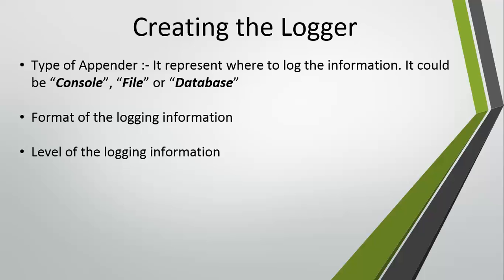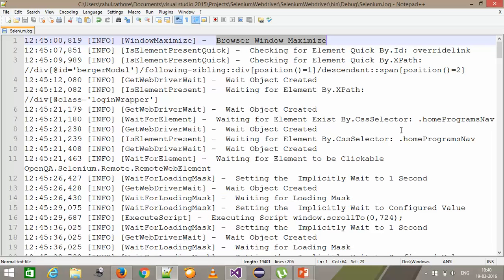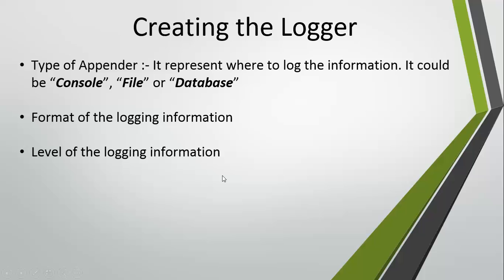The second is the format of the logging information. If I open my log file, as you can see there is a specific format being followed: the timestamp, the name of the method, the logging information, and the level of log. This type of format needs to be specified inside the configuration. The third is the level of logging information — I'll talk about the different levels log4net provides in more detail in an upcoming video.